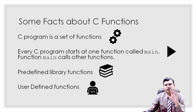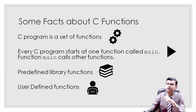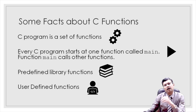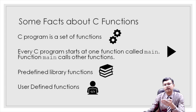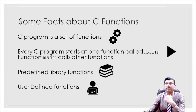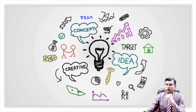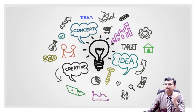A C program is essentially a set of functions. Every C program starts at the main function, which then calls other functions. Functions can be of two types: predefined library functions like printf and scanf, and user-defined functions which we define ourselves. Let's explore what questions are often asked in placement examinations from the point of view of functions.